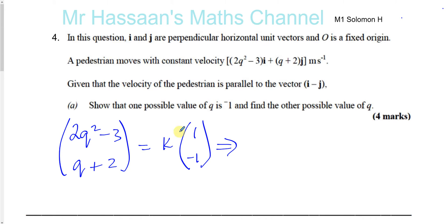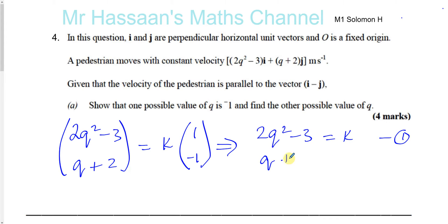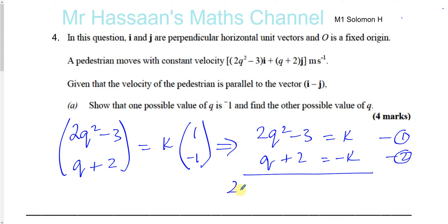From here, we form a pair of simultaneous equations. From the i components: 2q² - 3 = k — that's equation 1. And from the j components: q + 2 = -k — that's equation 2. If we add these two equations together, we eliminate the k's because they have different signs. So we get 2q² + q, and -3 + 2 gives -1, and k - k gives 0.